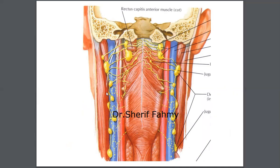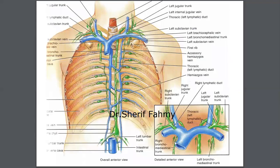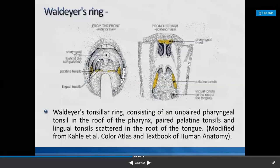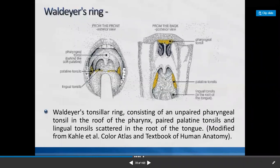We have the pharyngeal group of lymph nodes. The main channel through which the whole lymph flows is the lymphatic duct. In the oral cavity we have the ring called Waldeyer's lymphatic ring, which is chiefly comprised of the palatine tonsils, lingual tonsil, pharyngeal tonsil, and tubal tonsil — all together forming Waldeyer's lymphatic ring.